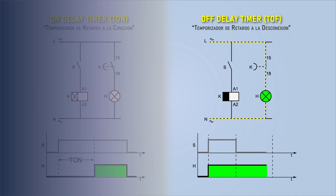When this time is up, the auxiliary contact K switches, that is, it opens, and the indicator H goes out.